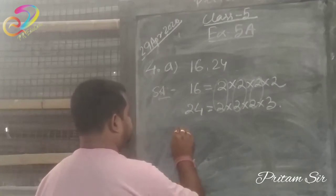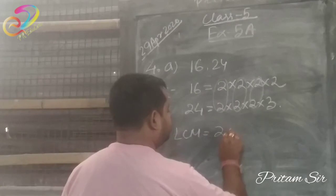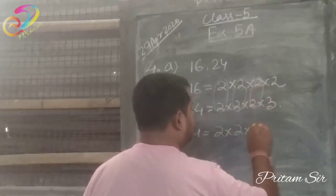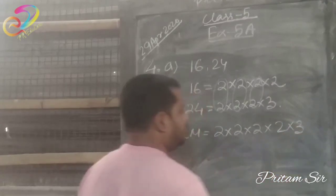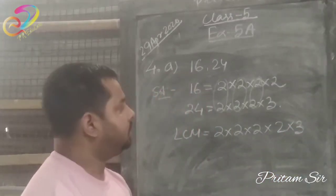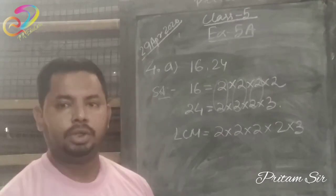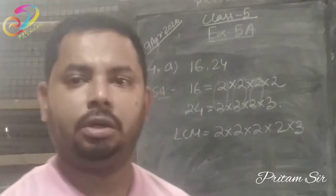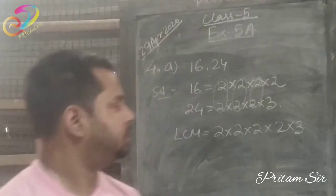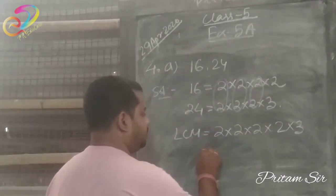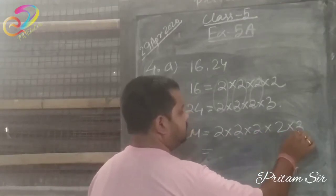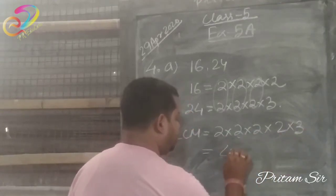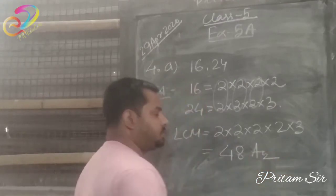So LCM is equal to from here one 2, from here one common, here one common, this 2, and this 3. As I am frequently saying, in case of LCM, which factors are remaining, those also you have to count. So 2 and 3 also you have to count. Now 2 here 4, we get 16, 16×3 is 48, so 48 is the answer.